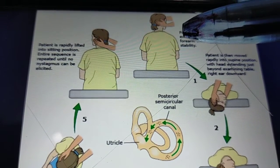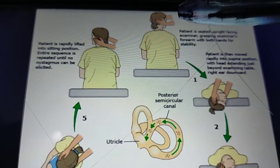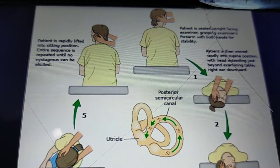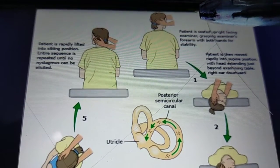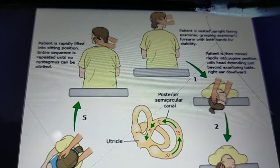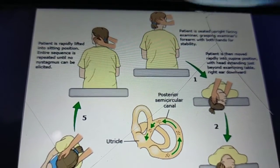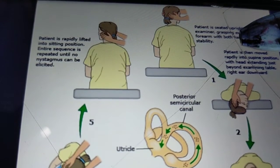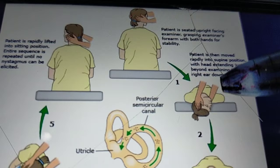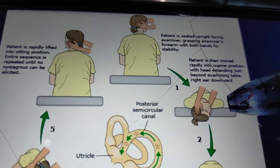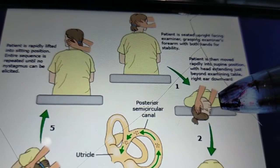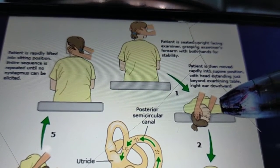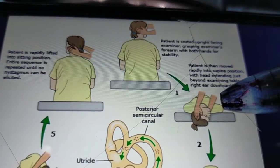The procedure starts with the patient in a sitting position with legs extended. Next, turn the patient's head toward the affected ear — for example, if the right ear is affected, turn the head to the right; if the left ear is affected, turn it to the left — approximately 45 degrees. Then immediately make the patient lie flat on the bed so that the pillow comes under the shoulders and the head is extended about 25 to 30 degrees. Keep the patient in this position for about 30 to 60 seconds. During this period you will notice the patient having nystagmus — that is, eye twitching.